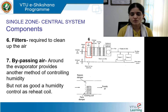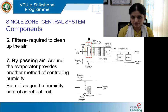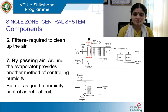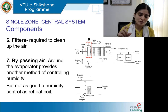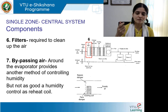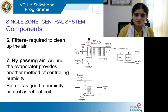Bypass air is circulated around the evaporator, which provides another method of controlling humidity in the air. However, the efficiency of controlling humidity compared to the reheat coil is limited. The bypass damper controls the amount of air passing through it. Dampers are small controlled openings which regulate the air quantity — they can be shut off when not required or regulated to let in the required quantity of air. This is all metered and monitored.